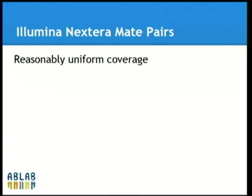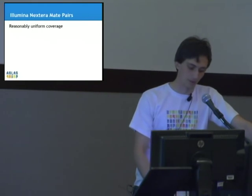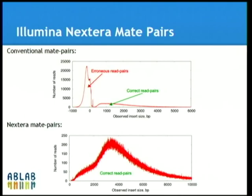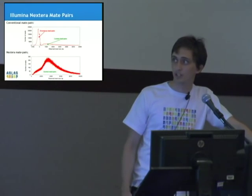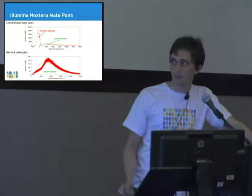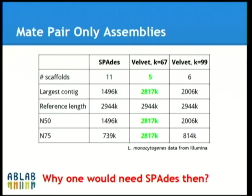A main feature of the previous release is NextEra mate-pair libraries. Illumina released a protocol that allows obtaining high-quality mate-pair libraries with rather uniform coverage and a nice insert-size distribution. If we look at usual mate pairs, they have a pretty nasty distribution because they have a lot of erroneous and chimeric read pairs with improper orientation — usually called the paired-end part — and only a few reads have proper orientation. NextEra mate pairs usually look like just long paired-end reads. We tried assembling them using SPADES and Velvet as Illumina recommends, and Velvet had better assembly.